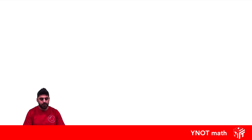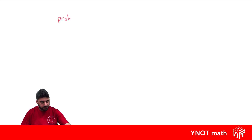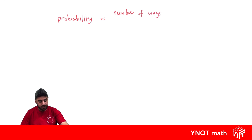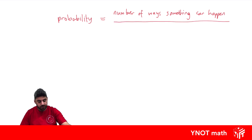How can we work out the theoretical probability of something happening? We can define probability as the number of ways something can happen that we're interested in, divided by the total number of ways everything can happen.